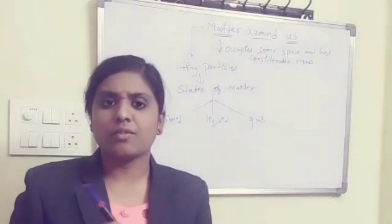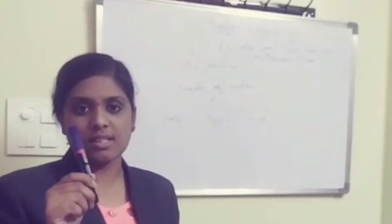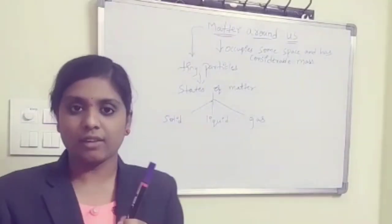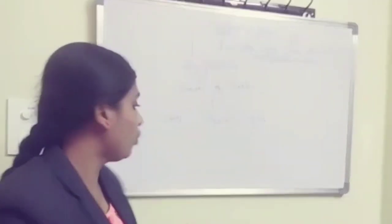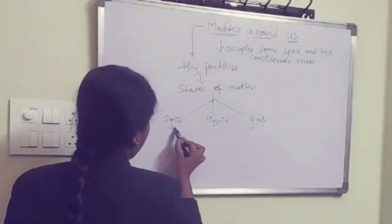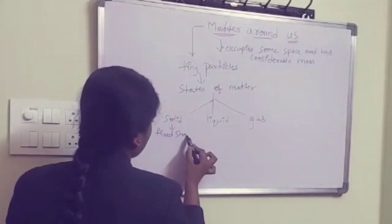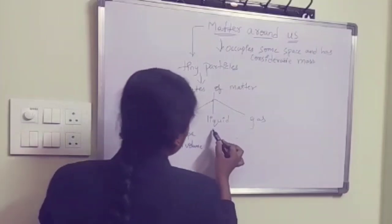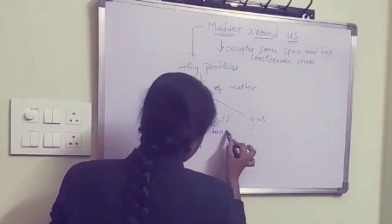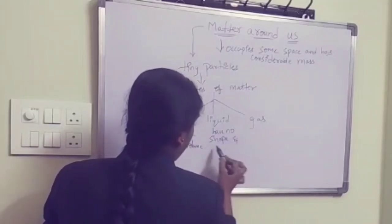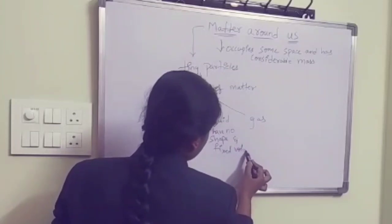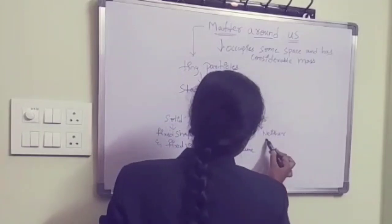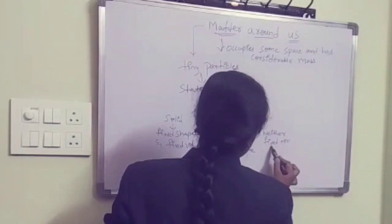If we are choosing any object — for example, this marker — whether it is solid, liquid, or gas, how will you differentiate? It depends on the material. Solids have fixed shape and fixed volume. Liquids have no fixed shape but fixed volume. Gas has neither fixed shape nor fixed volume.